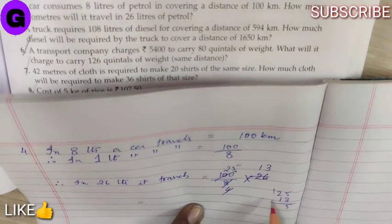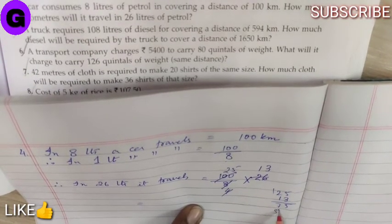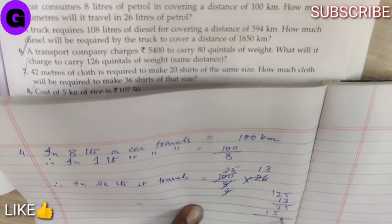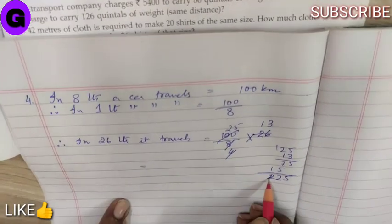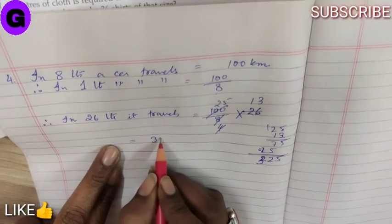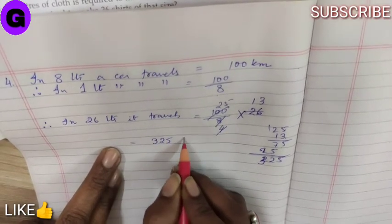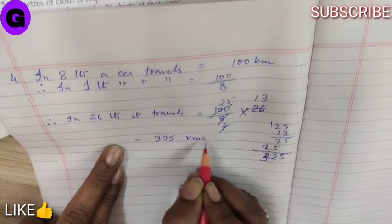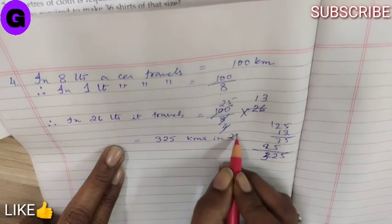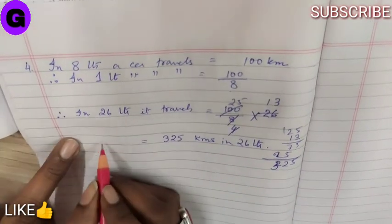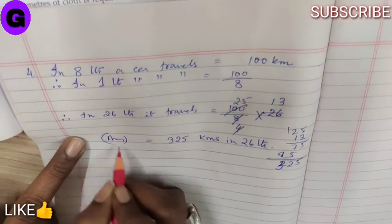let us multiply 25 into 13. 3, 5's are 15. 5, 6, 7, 5, 1. Is equal to 325 kilometres in 26 litres. This is the answer.